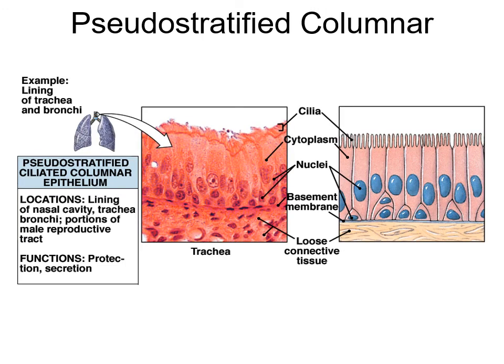Pseudo-stratified ciliated columnar epithelium is found lining mostly the trachea; it can also be found in portions of the male reproductive tract. Notice that all cells make it down to the basement membrane, which is what makes it pseudo-stratified rather than truly stratified.